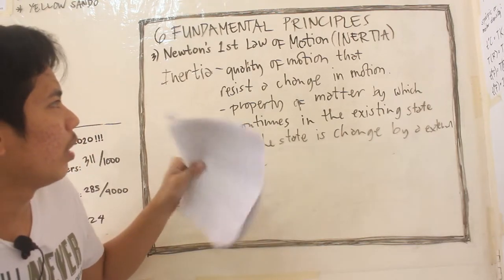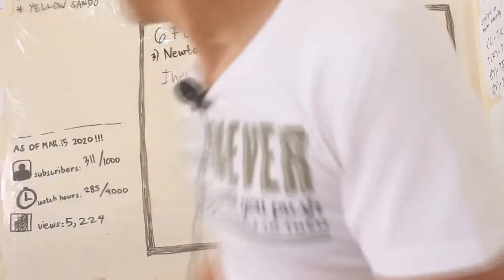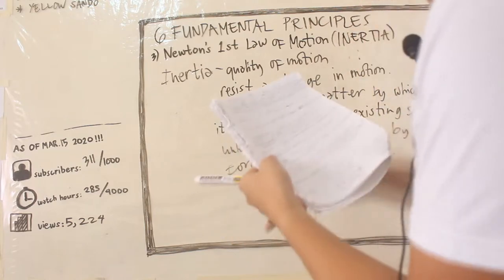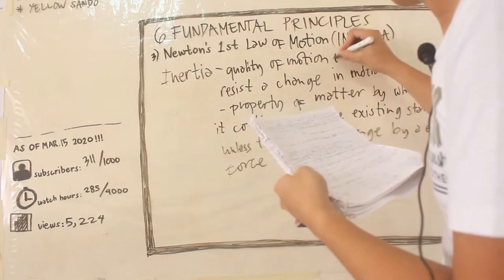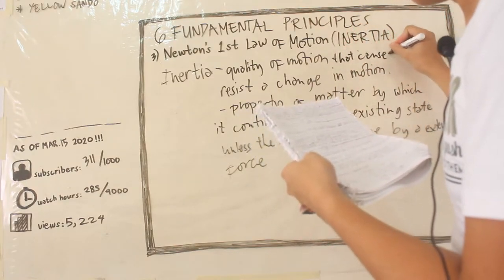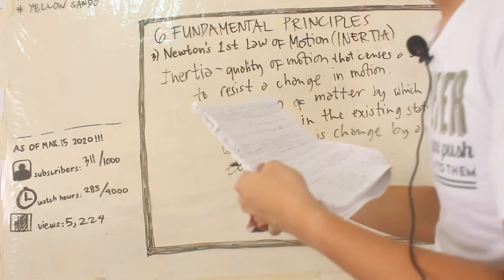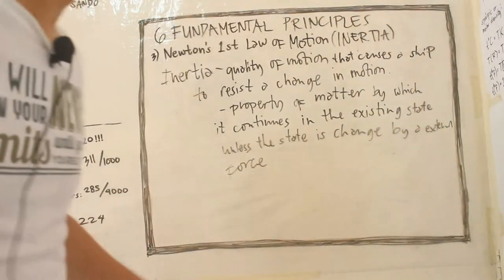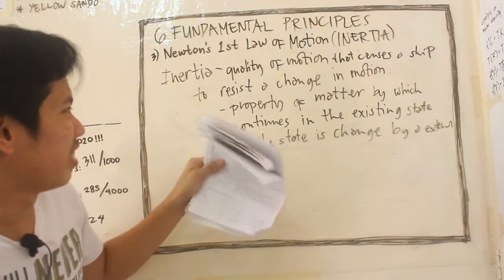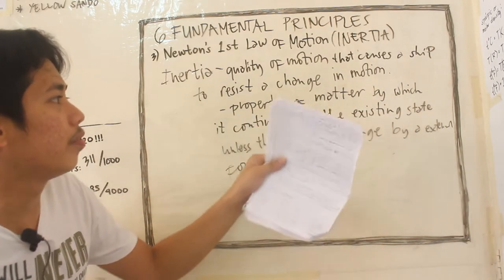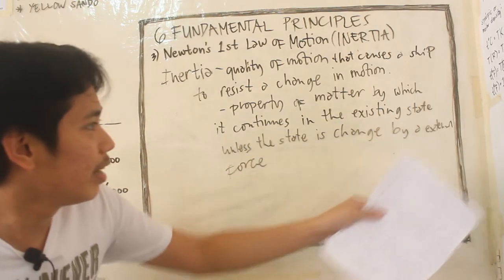So, quality of motion. Wait, there's a lack of damage. Sorry. Quality of motion that causes a ship to resist a change in motion. So, it is a property of matter by which it continues in the existing state unless the state is changed by external force.